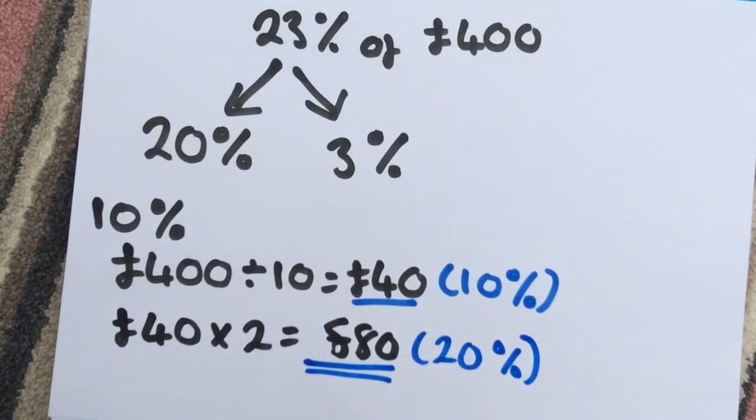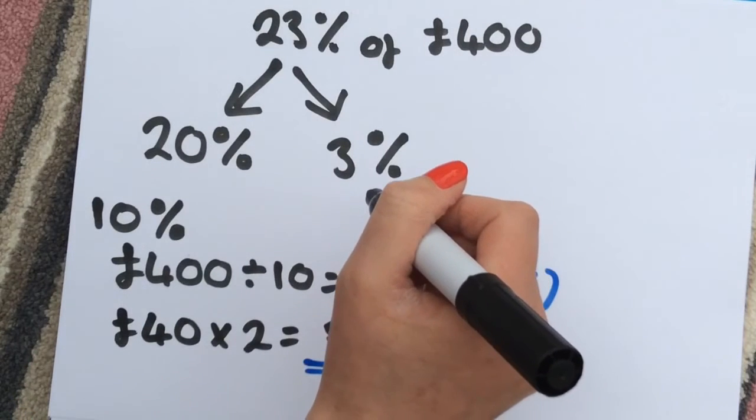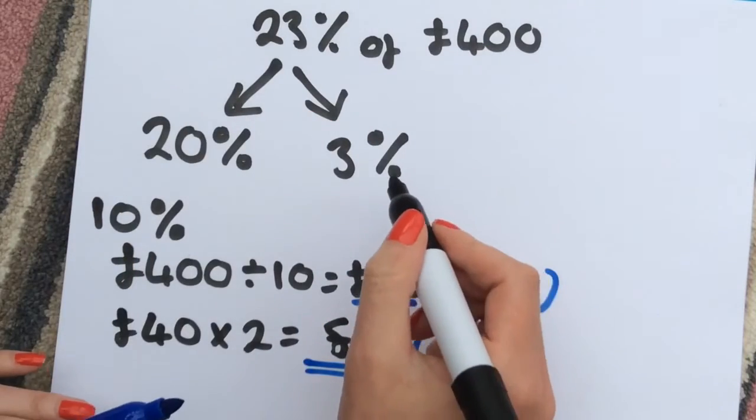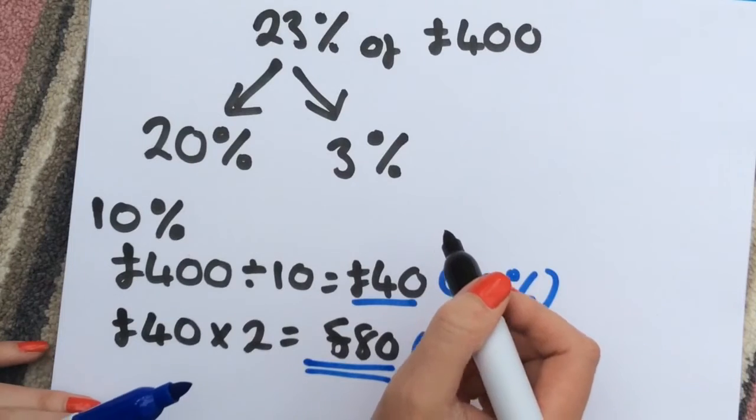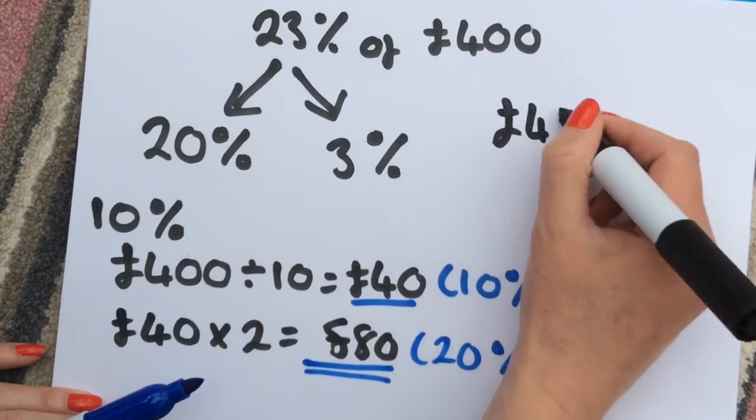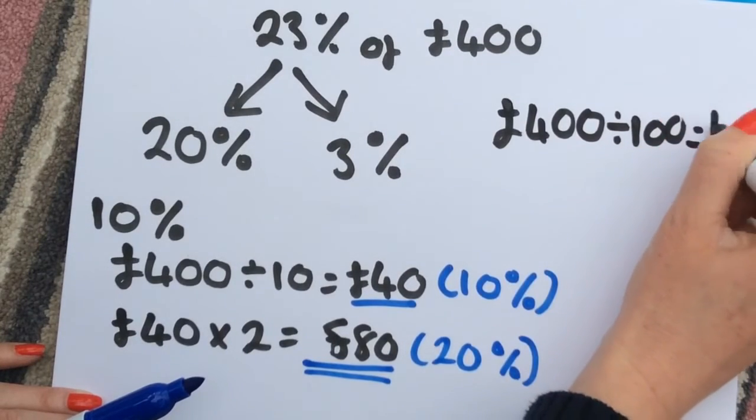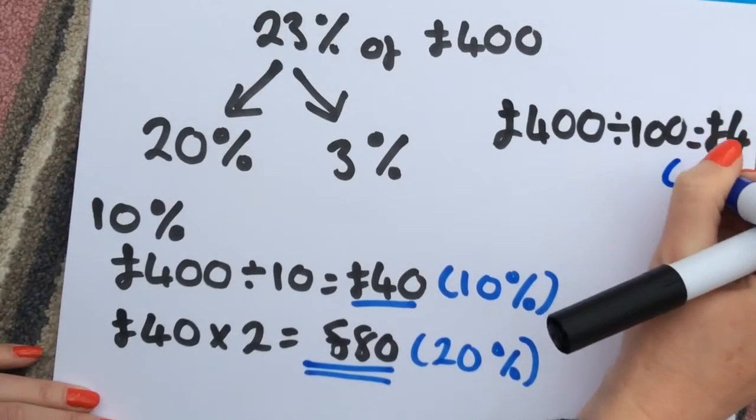Then with our units, just like this sort of 10%, we're then going to just break it down into units. So I'm going to take 1%. To find 1% of an amount, you will need to divide by 100. So we take the £400, divide that by 100. That will give you £4. So that's now worth 1%.